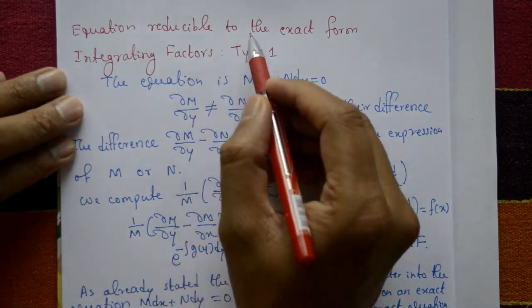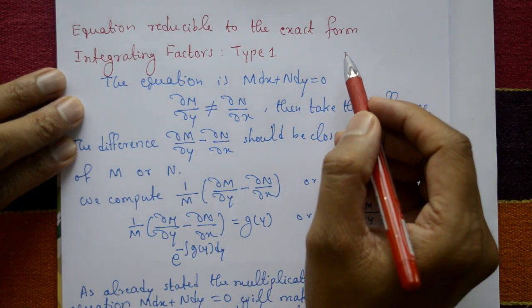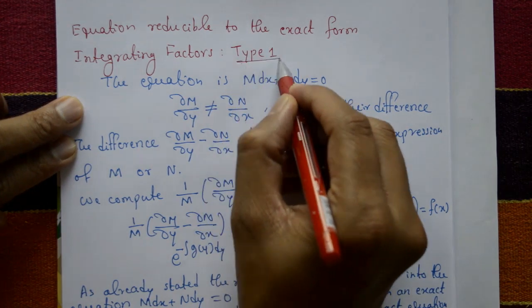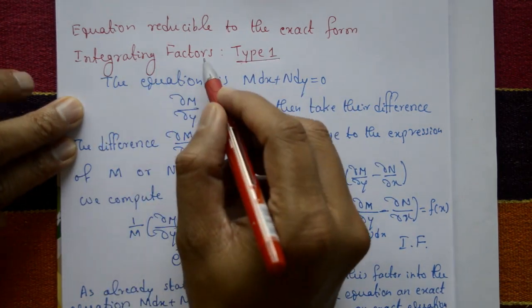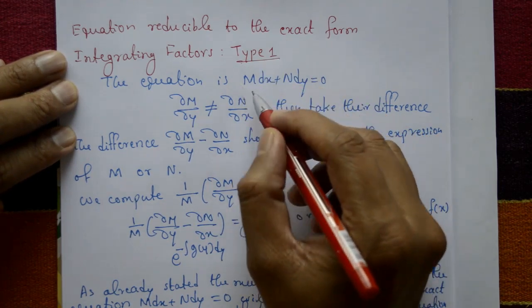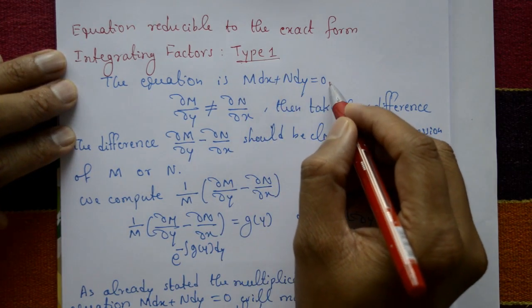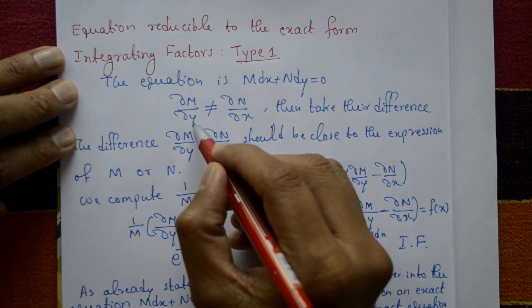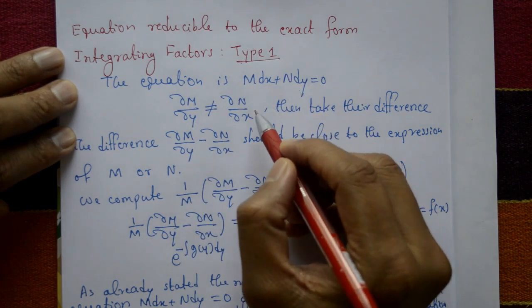Equation reducible to the exact form - Integrating Factor Type 1. The equation is generally like this: M dx plus N dy equal to 0. Now differentiate M with respect to y and differentiate N with respect to x.